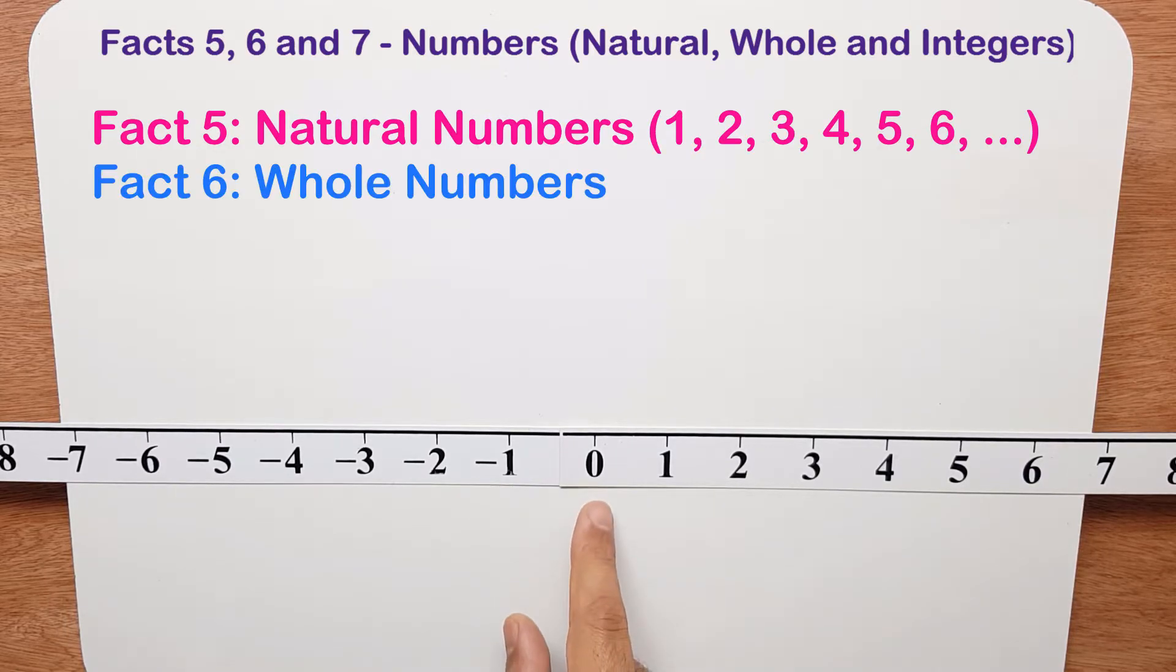If somebody asks you for whole numbers, you start at 0, 1, 2, 3, 4, 5, 6 and so on, and you continue on that way.